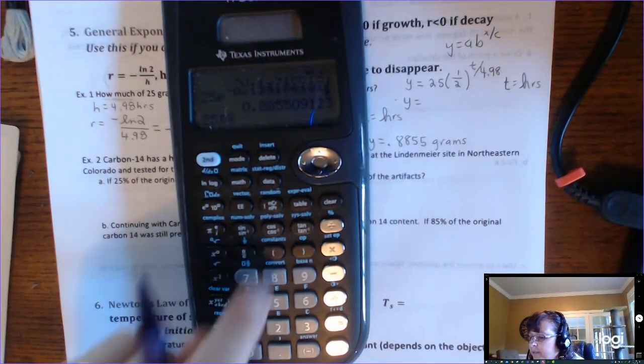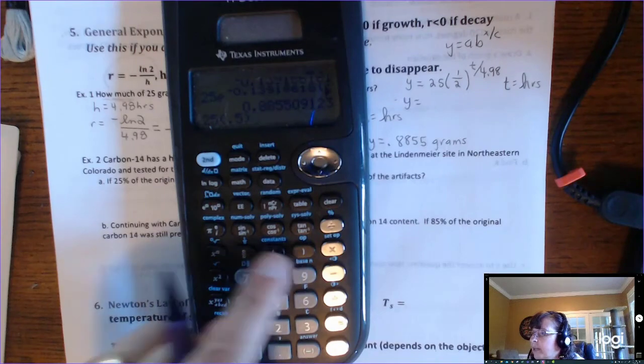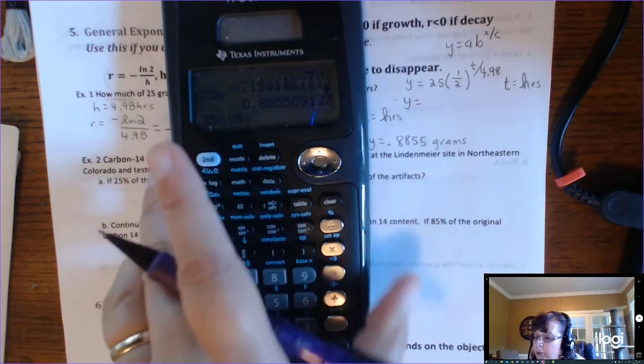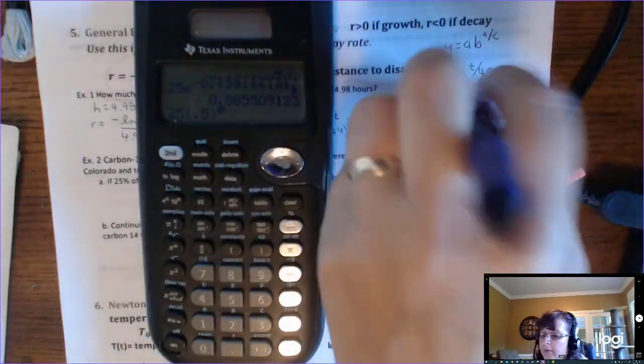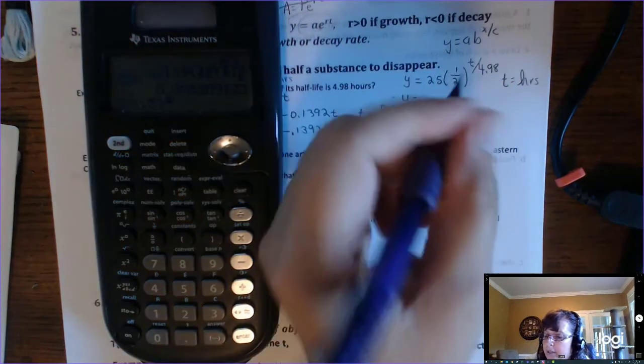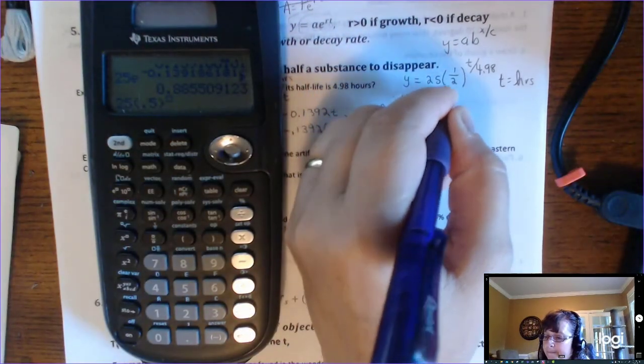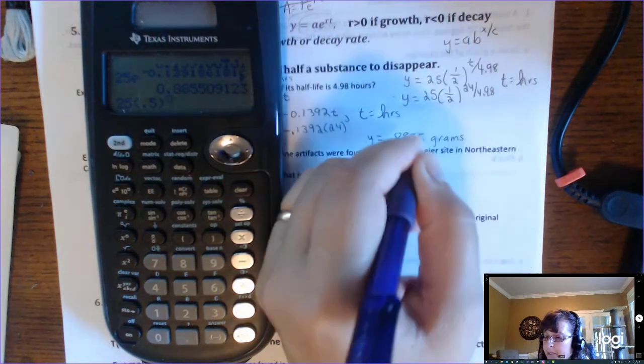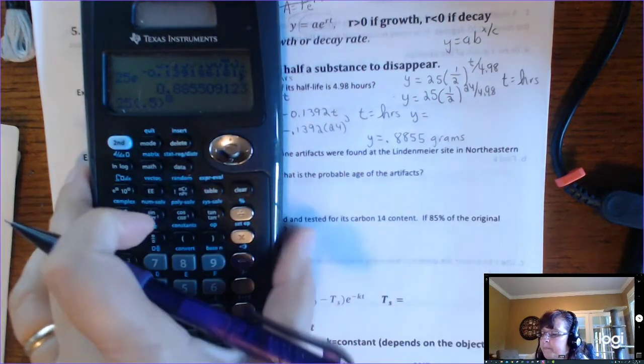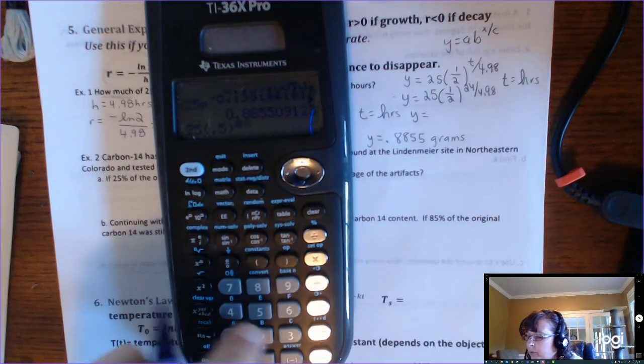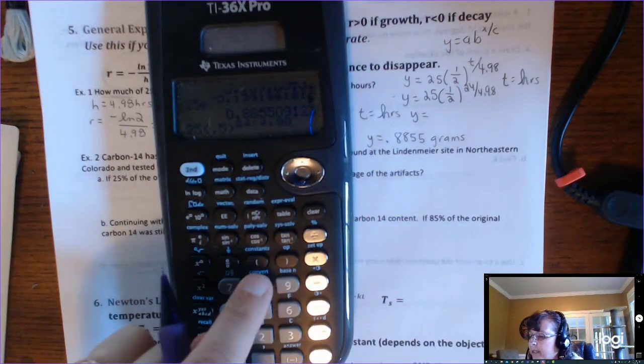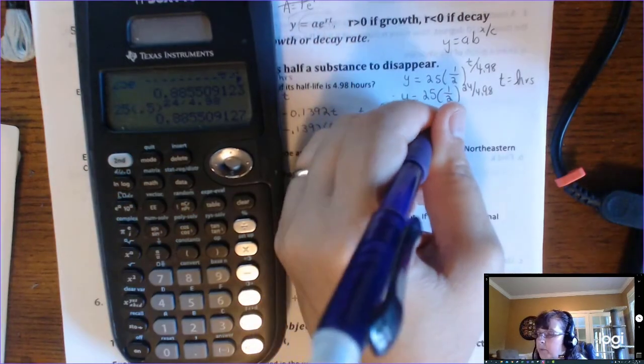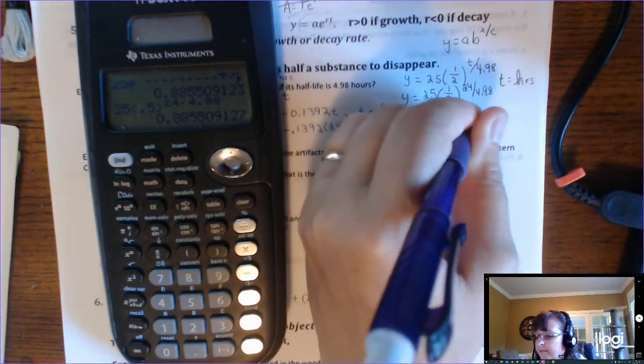So we have 25 times 0.5, that same thing as one-half, to the, and we want to know how much is after 24 hours, so we'll put 24 hours in there, so we can find Y. Okay, 24 divided by 4.98. Okay, just comparing to see what we get. Ooh, look what we get, 0.8855 grams.